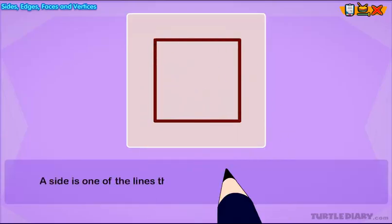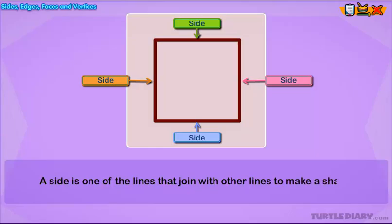A side is one of the lines that join with other lines to make a shape.